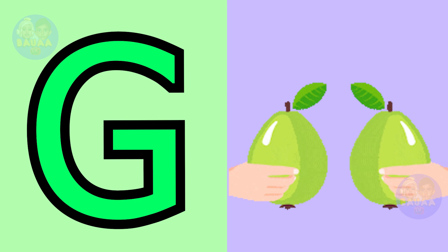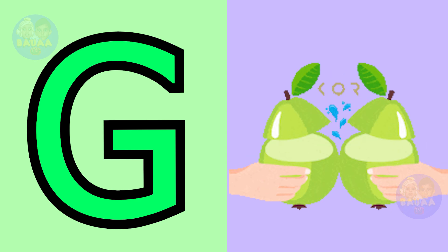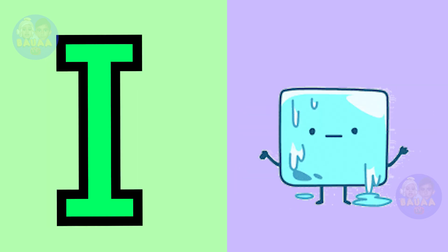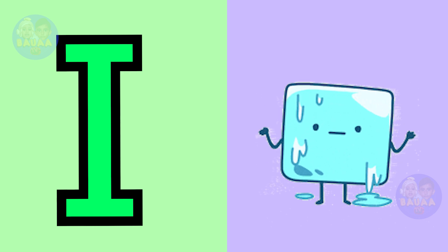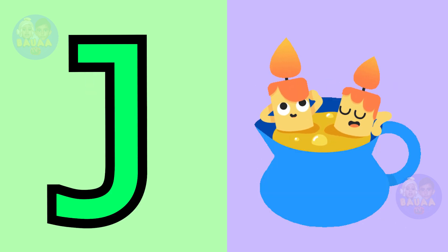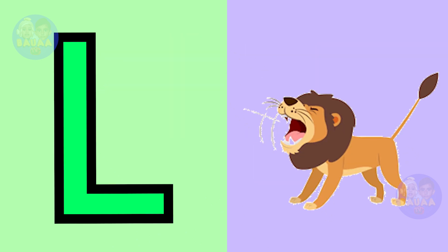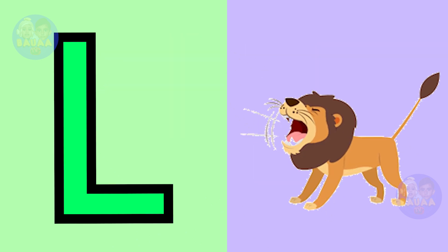G for guava, H for house, I for ice, J for juice, K for king, L for lion.